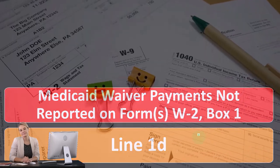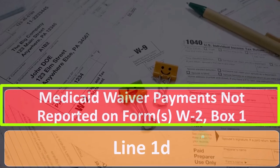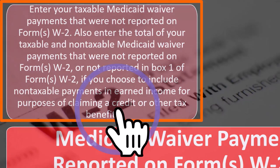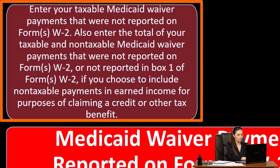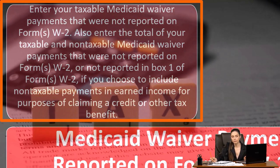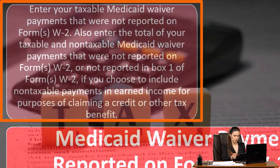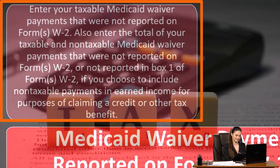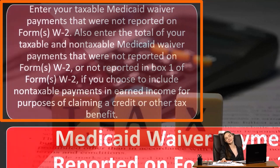Line 1D: Medicaid waiver payments not reported on Forms W-2, Box 1. Enter your taxable Medicaid waiver payments that were not reported on Forms W-2. Also enter the total of your taxable and non-taxable Medicaid waiver payments that were not reported on Forms W-2, or not reported in Box 1 of Form W-2, if you choose to include non-taxable payments and earned income for purposes of claiming a credit or other tax benefit.